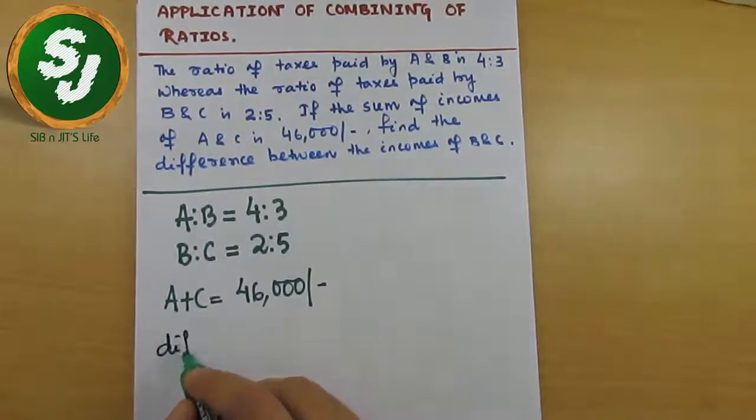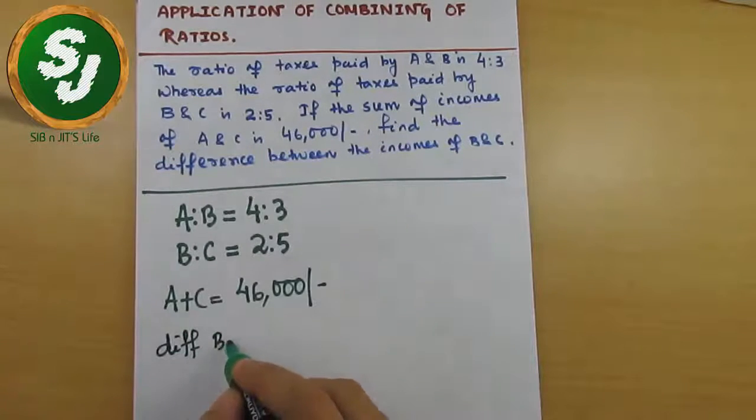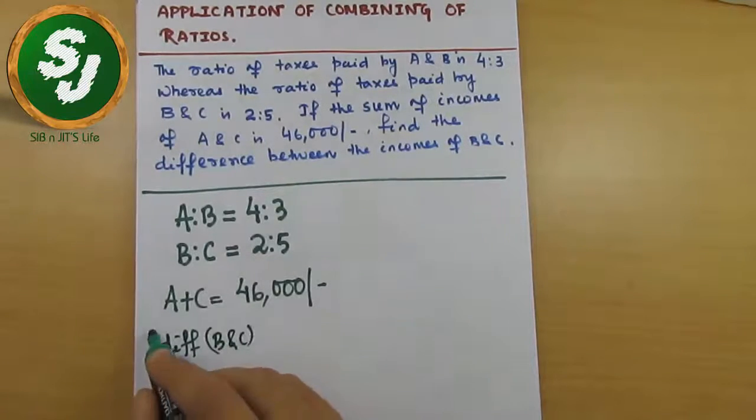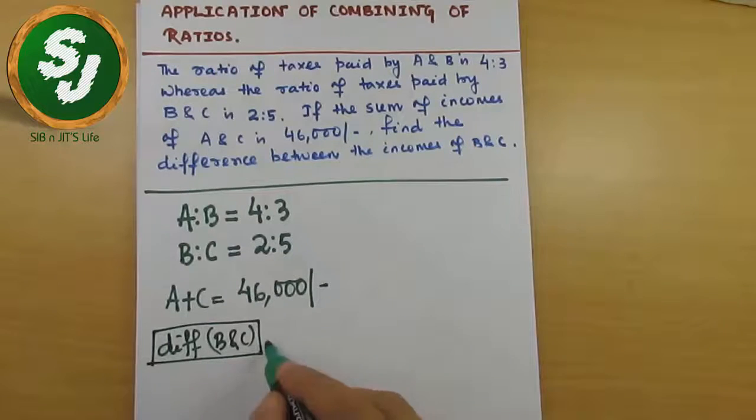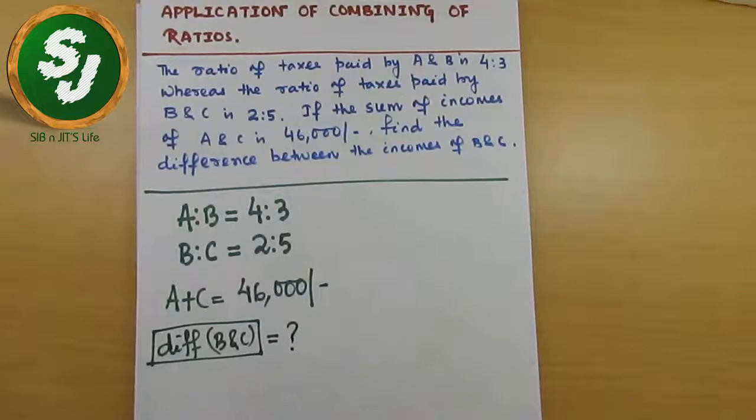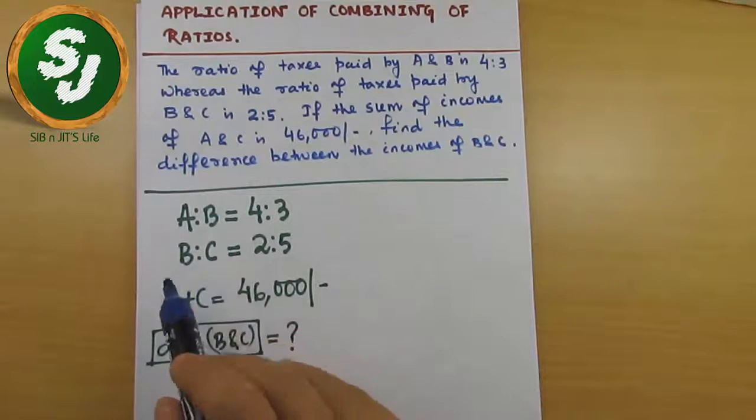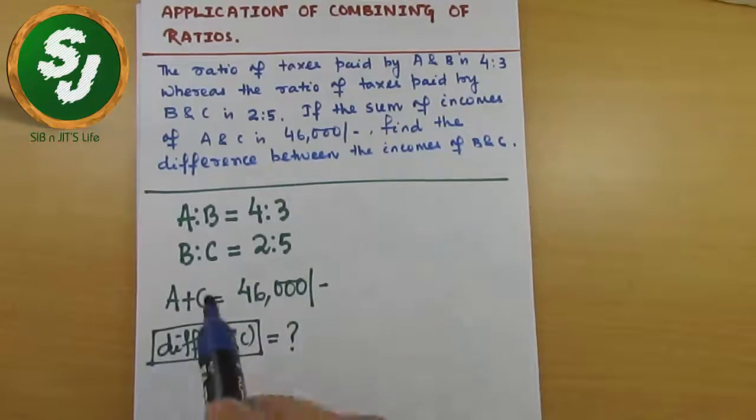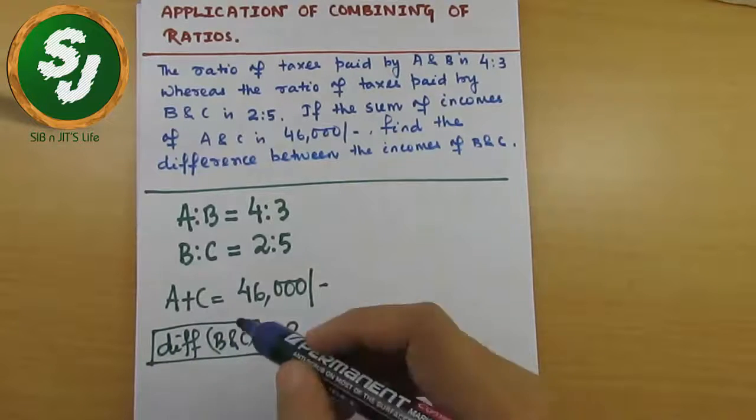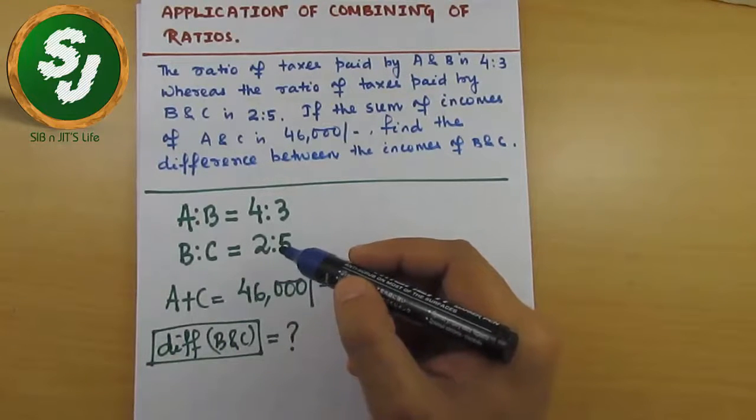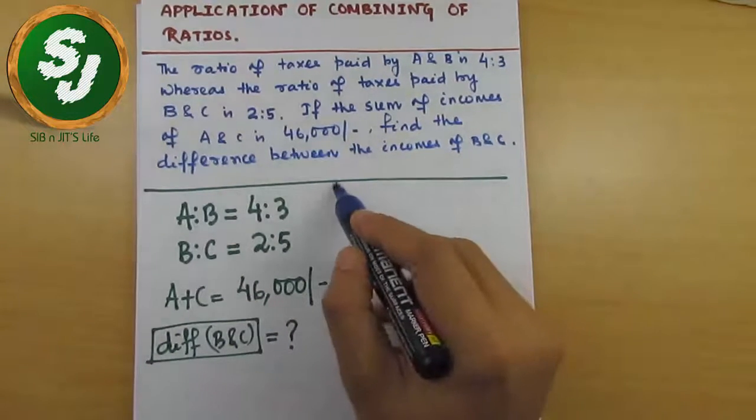Let me remind you once again what I told you in the last video. When you see two different ratios like this, A:B and B:C, remember that it's a situation in which you have to combine these two ratios to make them one. This is one critical step—if you take this, you'll save a lot of time.